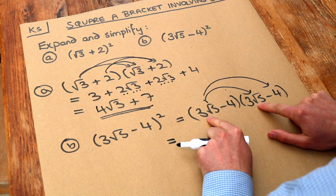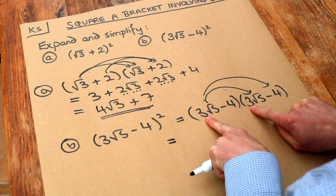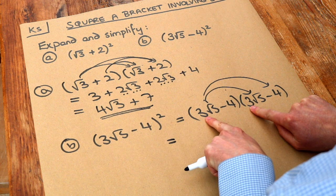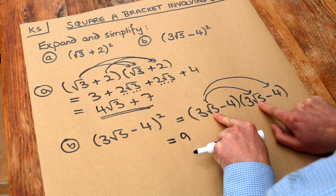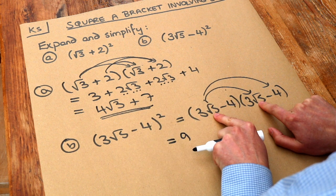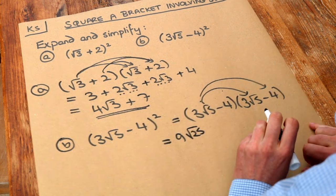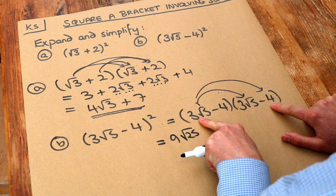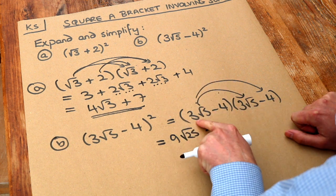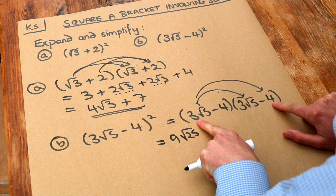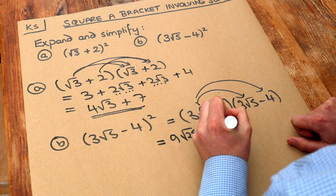So 3 root 5 times 3 root 5. To multiply more complicated surds like this, we first multiply the non-surd parts together: 3 times 3 is 9. Then we multiply the surds together: root 5 times root 5 is root 25, and we'll simplify that on the next line. Then we do 3 root 5 times minus 4 — positive times negative is negative. We get the sign right first, then multiply the non-surds: 3 times 4 is 12, and the surd part is root 5.